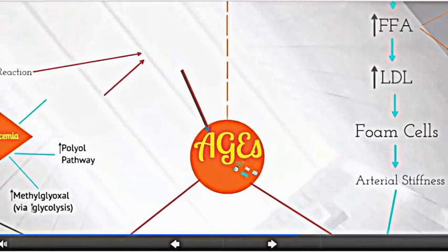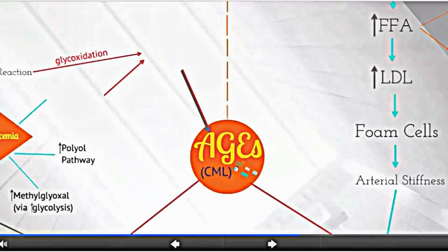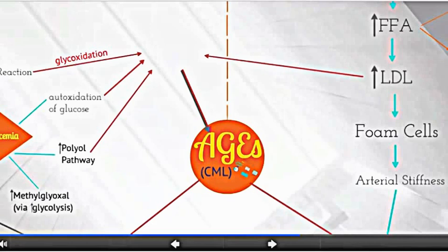Currently, the primary AGE studied is carboxymethyl lysine. This AGE can be formed through glycoxidation, autoxidation of glucose, or the polyol pathway when intracellular glucose levels are elevated from carbohydrate metabolism, or through lipid peroxidation from increased oxidation of fatty acids and LDLs.